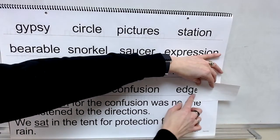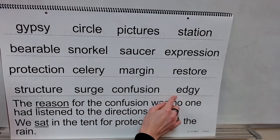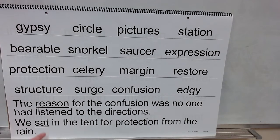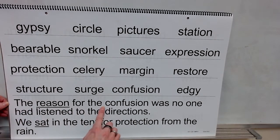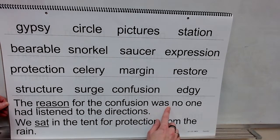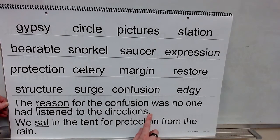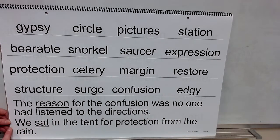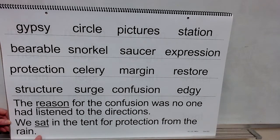Here's your base word: edge. Drop the E. Add the ending, or the suffix. Word: edgy. Now let's read these sentences. The reason for the confusion was no one had listened to the directions. Yes, the reason for the confusion was no one had listened to the directions. Read: We sat in the tent for protection from the rain. Yes, we sat in the tent for protection from the rain.